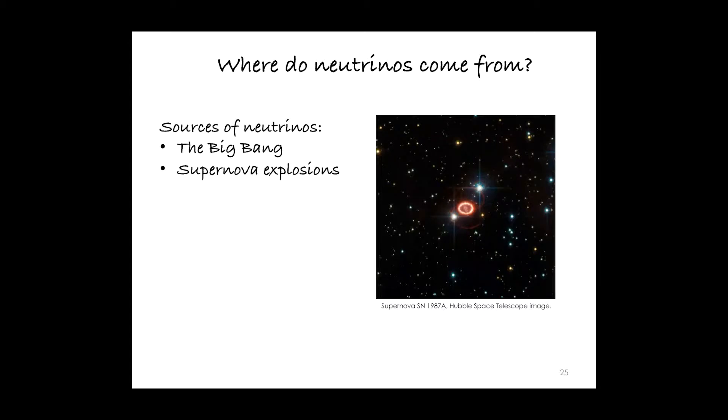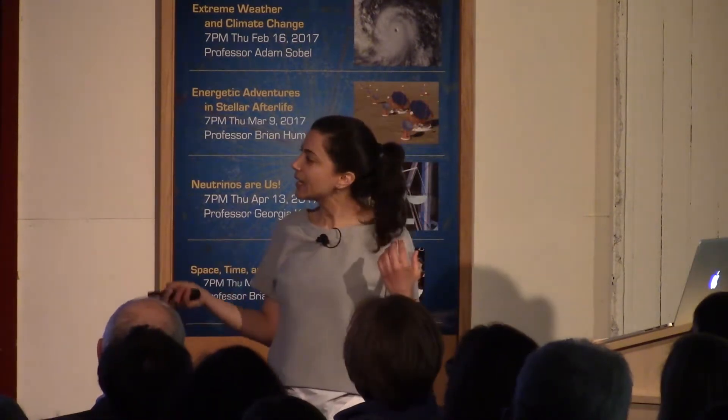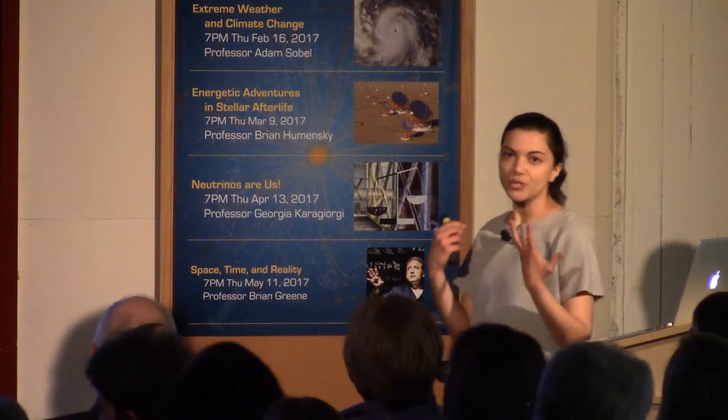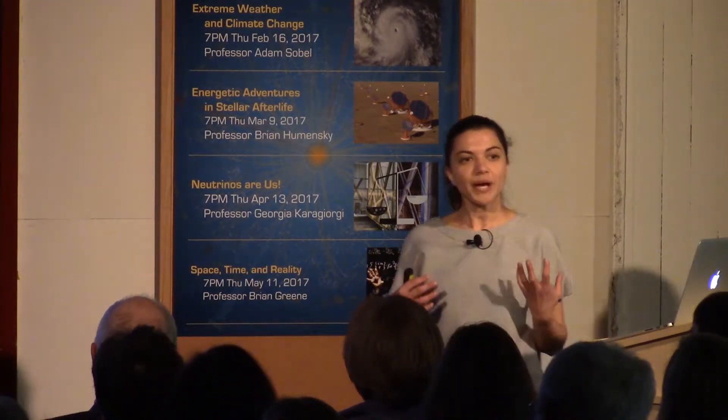Neutrinos are also produced in supernova explosions. This is another image from the Hubble Space Telescope, which shows Supernova 1987A — a star that basically had a dramatic end-of-its-life explosion in 1987. As a result of that explosion, it emitted enough neutrinos so that we were actually able to detect neutrinos from that supernova explosion in one of the detectors that were running in Japan at the time.